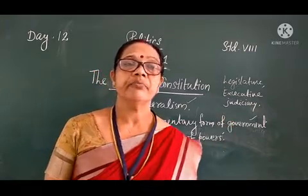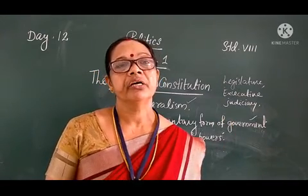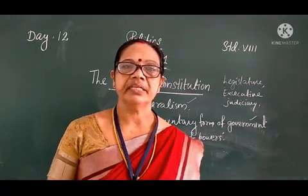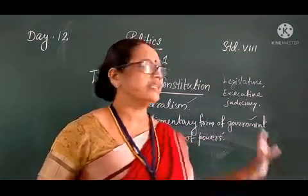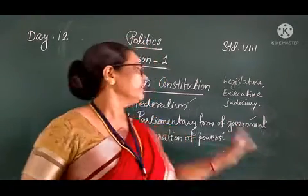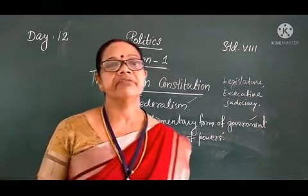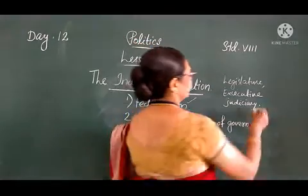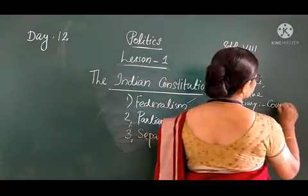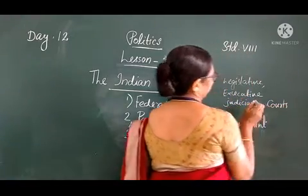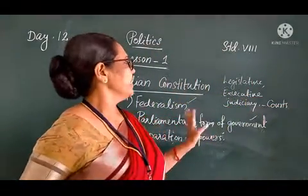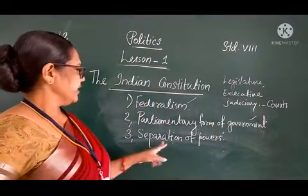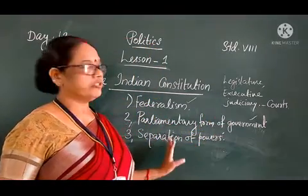The Executive refers to the people who are responsible for implementing laws and running the government. The third one is the Judiciary, which refers to the system of courts. These are the three organs of the government: Legislature, Executive, and Judiciary. This is known as the separation of powers.